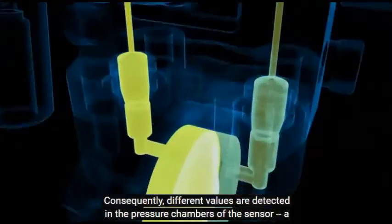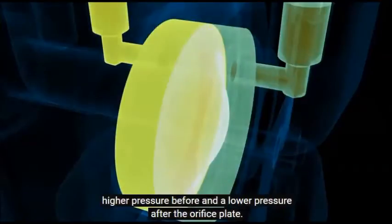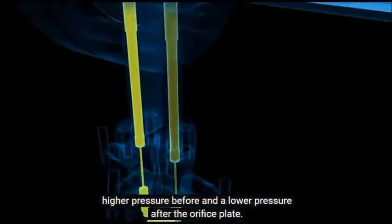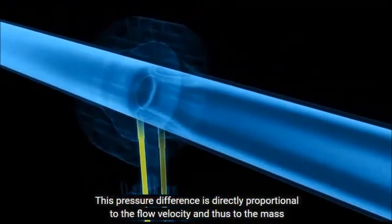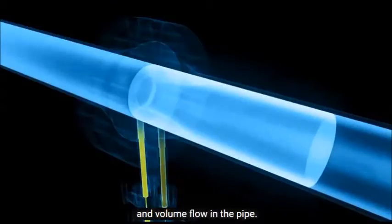Consequently, different values are detected in the pressure chambers of the sensor, a higher pressure before and a lower pressure after the orifice plate. This pressure difference is a direct measure for the flow velocity and thus the mass and volume flow in the pipe.